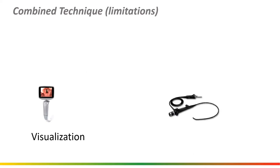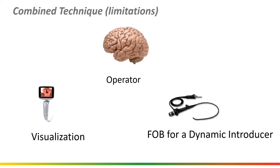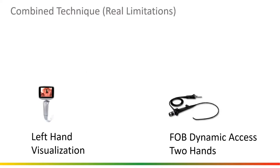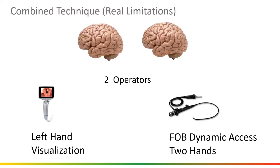Limitations: left-hand visualization is great, but two hands to operate a fiber optic scope — because that's the way they're designed — means two operators to coordinate. When three hands are involved in the procedure, you have two operators to coordinate, and that presents problems in itself.